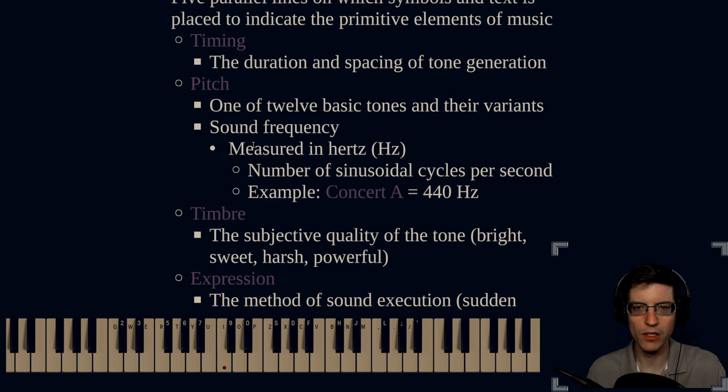Primitive elements of music. So, what are these? They are timing, the duration and spacing of tone generation, pitch. And in the context of Western music, pitch is one of 12 basic tones with its variants. So, we call those octaves, right? The sound and a pitch is actually a sound frequency measured in hertz. This is the number of sinusoidal cycles per second. So, I can actually show you on this keyboard right here.